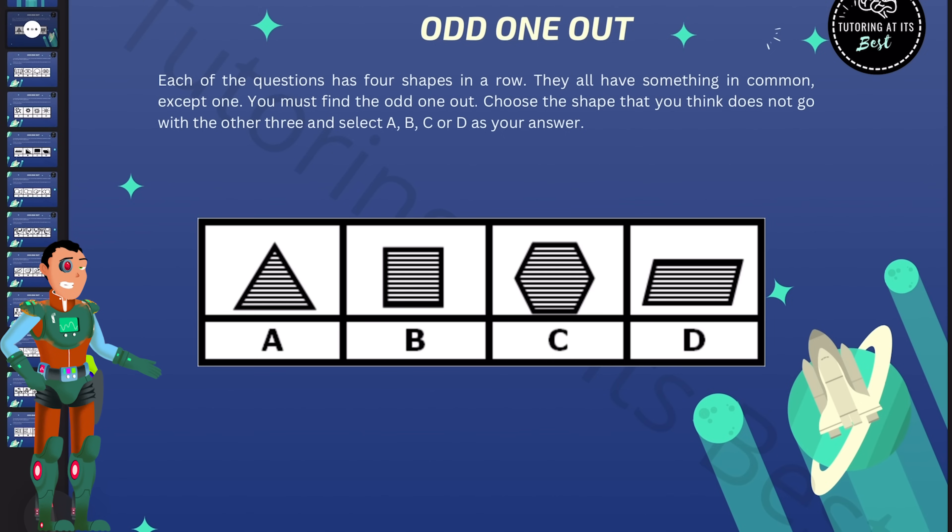In this, each of the questions has four shapes in a row, and they all have something common except one. So you must find the Odd One Out. We're going to choose the shapes that we think do not go with the other three, and then highlight it.